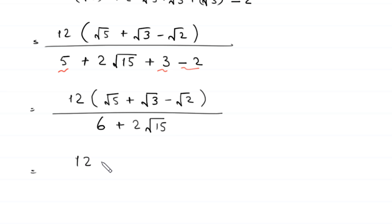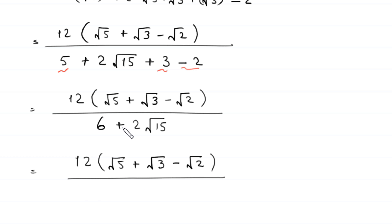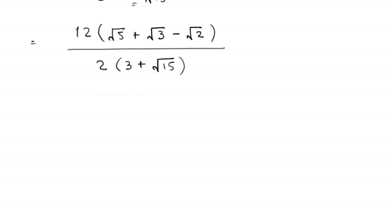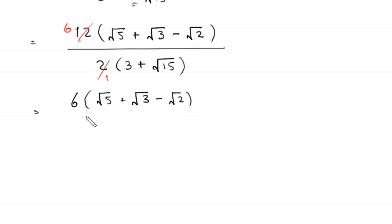We have 12 times (root 5 plus root 3 minus root 2) divided by 6 plus 2 root 15. From the denominator we can factor out 2, leaving 2 times (3 plus root 15). The 2 and 12 cancel to give 6, so we have 6 times (root 5 plus root 3 minus root 2) divided by 3 plus root 15, which we rewrite as root 15 plus 3.